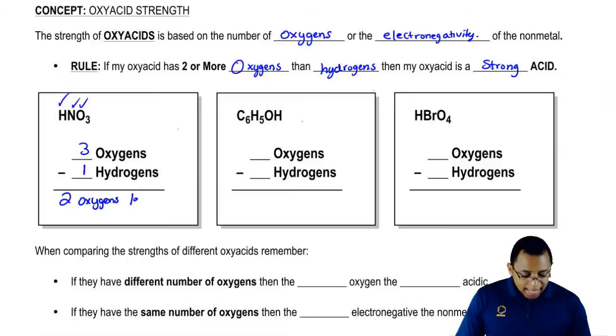When we do this math, we have to have a minimum of two oxygens left. If we don't have that minimum, then we can't be a strong oxyacid. We've met the minimum, so this is a strong oxyacid.